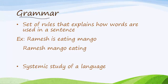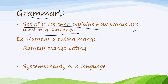So, what do you know about grammar? Grammar means a set of rules that explains how words are used in a sentence. For example, 'Ramesh is eating mango' is a systematic sentence. We cannot write 'Ramesh mango eating.' That is why grammar is there — for this correction.